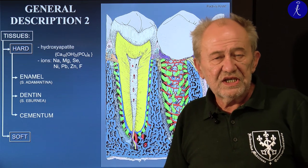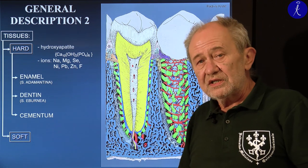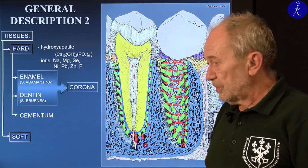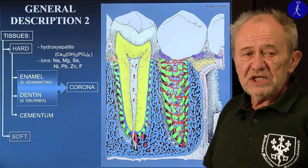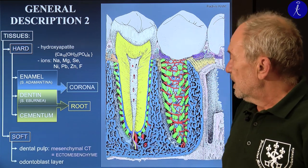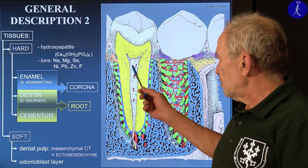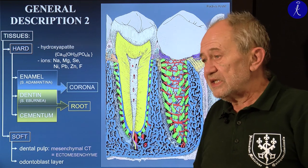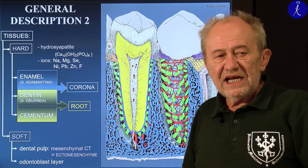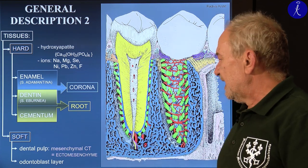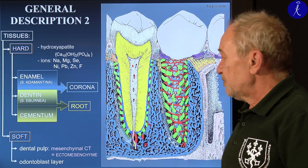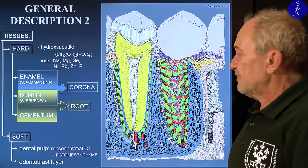When you receive a tooth slice on the exam, first ask yourself which part of the tooth it is from. If you see enamel plus dentine together, the slice is from the crown. If you see dentine and cementum together, the root is cut through. In the pulp chamber, mesenchymal connective tissue is found with many blood vessels and nerves — responsible for toothache. This mesenchyme is of ectodermal origin, so we call it ectomesenchyme. A living odontoblast cell layer lines the pulp chamber cavity, making blood supply essential.